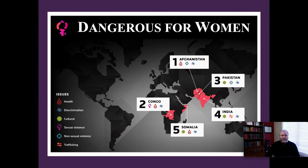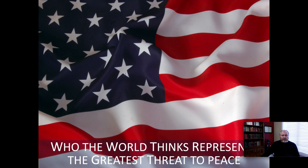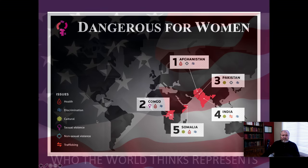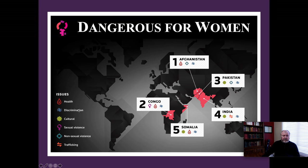Danger for women: if you look at different places in the world — India, Pakistan, Afghanistan, Somalia, and the Congo — and look at the legend, you can see what issues make those places dangerous for women. For example, in Afghanistan, you can see that it is threats to health, non-sexual violence, and also discrimination. You can read the legend and see what it's like in other places.